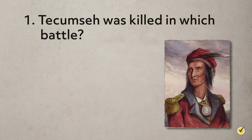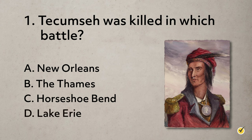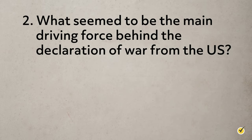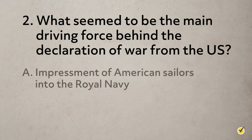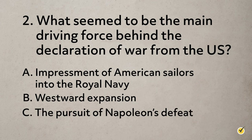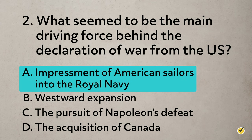Number one: Tecumseh was killed in which battle? A. New Orleans. B. The Thames. C. Horseshoe Bend. Or D. Lake Erie. The correct answer is B, the Battle of the Thames. Number two: What seemed to be the main driving force behind the declaration of war from the U.S.? A. Impressment of American sailors into the Royal Navy. B. Westward expansion. C. The pursuit of Napoleon's defeat. D. The acquisition of Canada. The correct answer is A, the impressment of sailors into the Royal Navy.